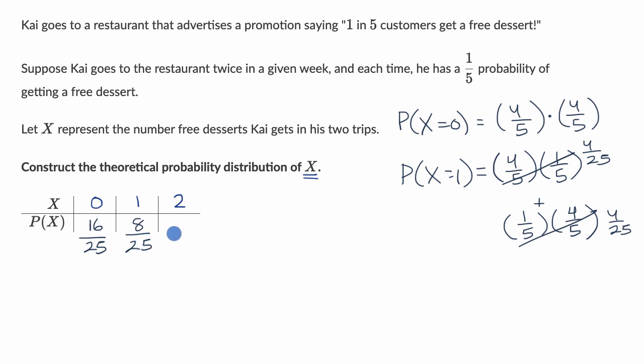And then last but not least, and actually we could figure out this last one by subtracting 16 and 8 from 25, which would actually give us 1/25. But let's just write this out. The probability that X equals two, this is the probability he gets a dessert on both days. So one-fifth chance on day one and one-fifth chance on the second day. So one-fifth times one-fifth is 1/25.